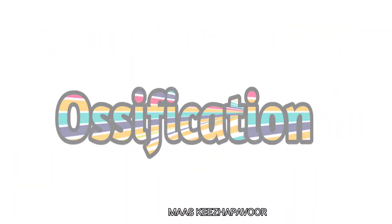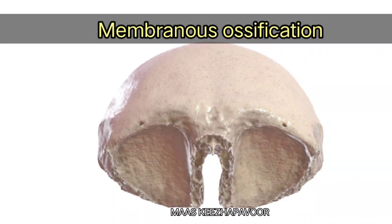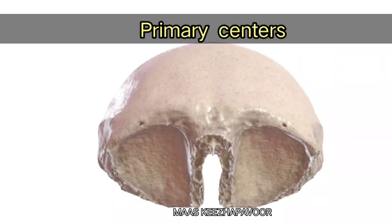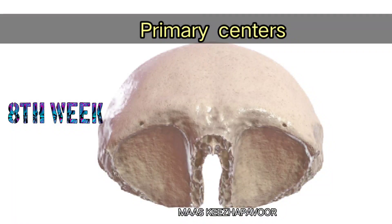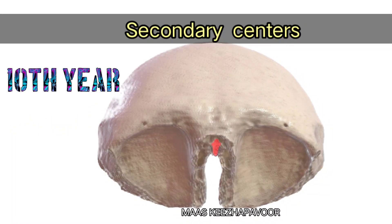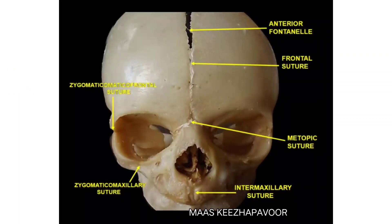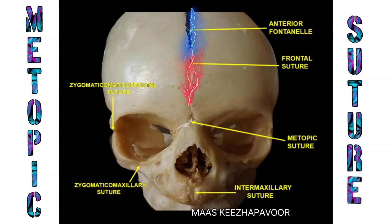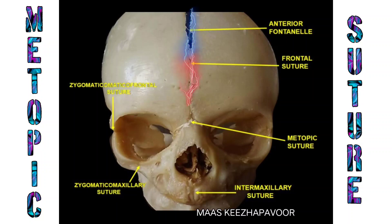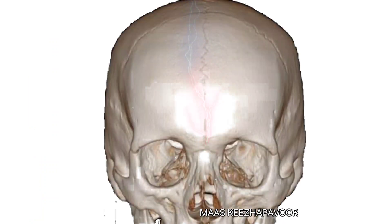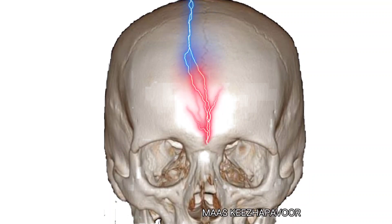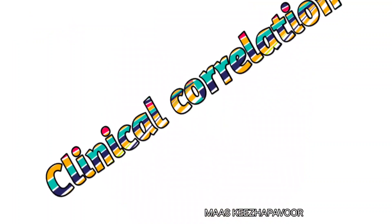The frontal sinuses are small at birth, become well developed by the 7th or 8th year of life, and reach full development by puberty. Frontal bone undergoes membranous ossification. There are two primary centers appearing near the frontal tuberosities at the 8th week of intrauterine life. The nasal spine may develop from two secondary centers appearing at the 10th year of life. At birth, the bone consists of two halves separated by a frontal or metopic suture, which gets obliterated from above downwards between the 2nd and 8th year.